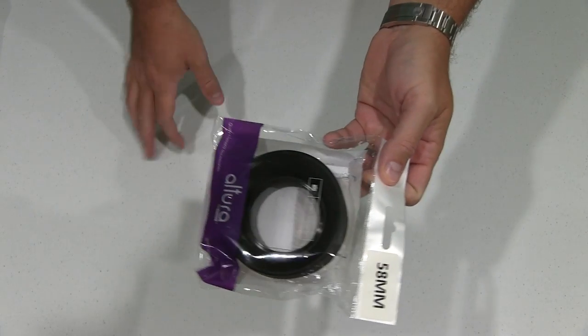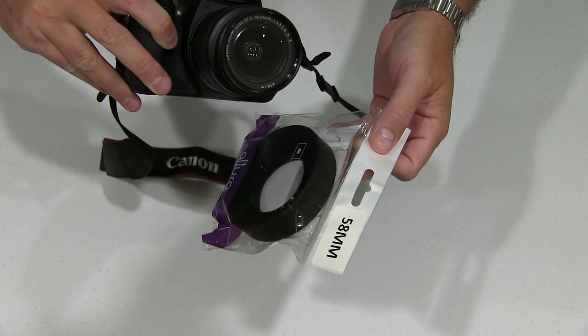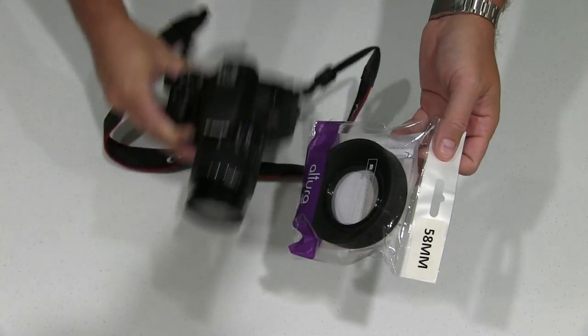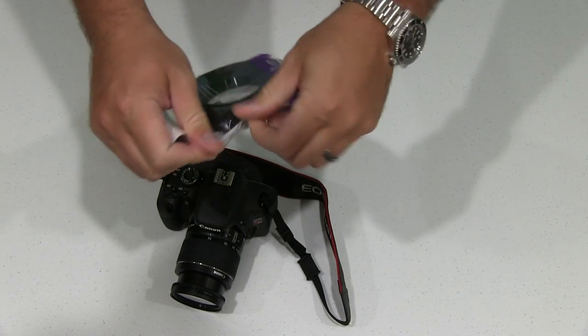And I'm going to use it with the stock EF-S 18-55mm lens that came with my Canon T3i, also known as Canon 600D.